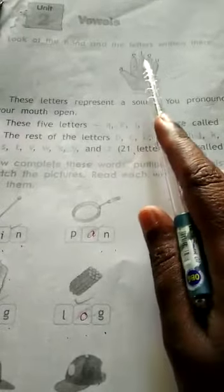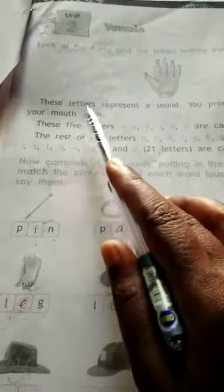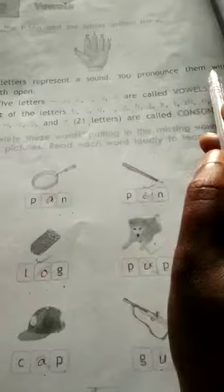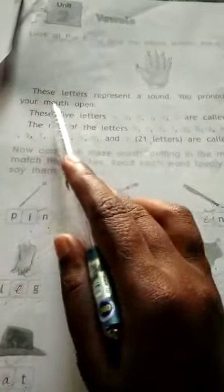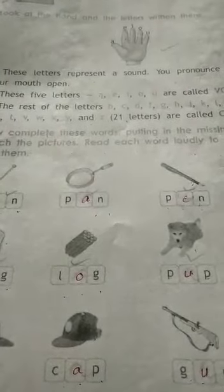In all the five fingers there are one letter on each. These letters represent a sound you pronounce with your mouth open. All these five letters represent the sound which you say with your open mouth.